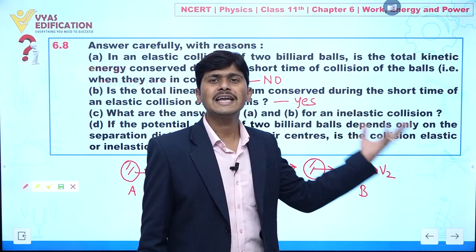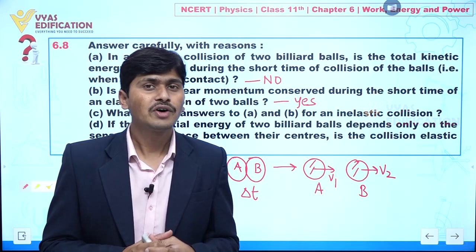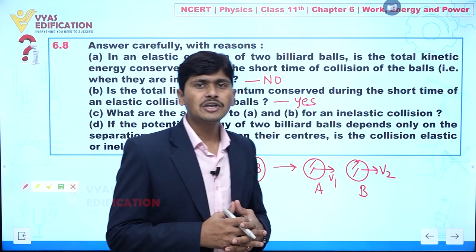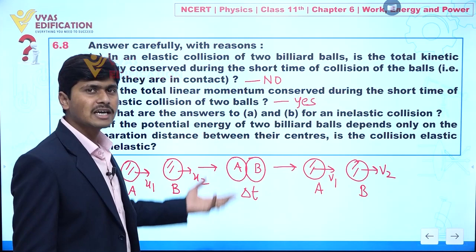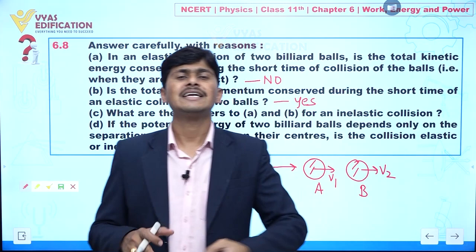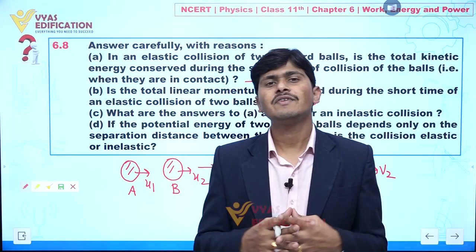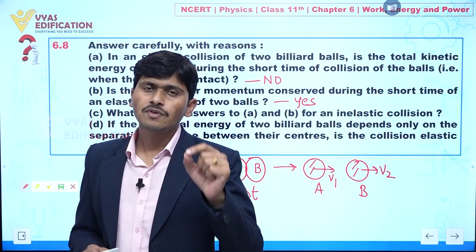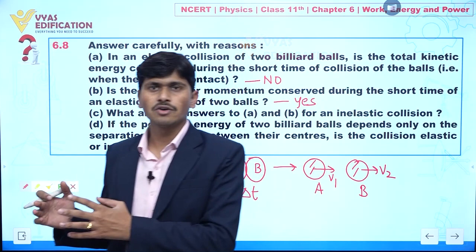In elastic collision, linear momentum, kinetic energy, and total energy of a system always remain constant. But in inelastic collision, linear momentum and total energy remain conserved, however kinetic energy of the system does not remain the same. That is the only difference between elastic and inelastic collision: in inelastic collision, kinetic energy after collision is not the same as before collision.